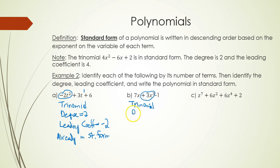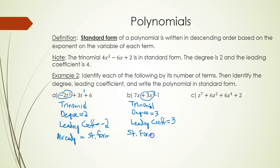In part b, still three terms — still a trinomial. The term of highest power gives a degree of three and a leading coefficient of three. For standard form, 3x cubed comes first, then plus 7x, then minus one at the end.